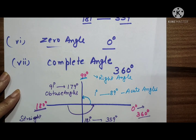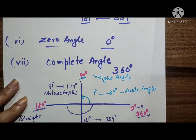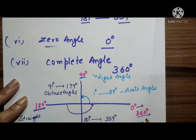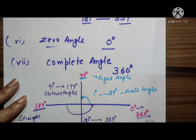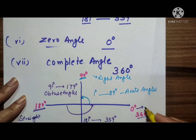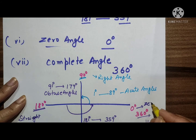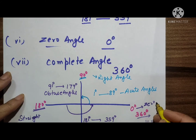360 degrees is called a complete angle, and 0 degrees is called a zero angle.